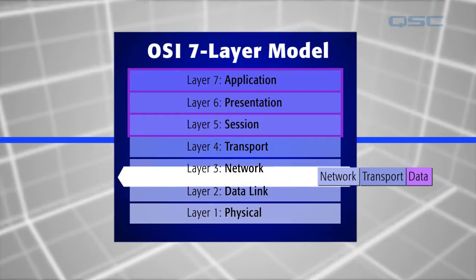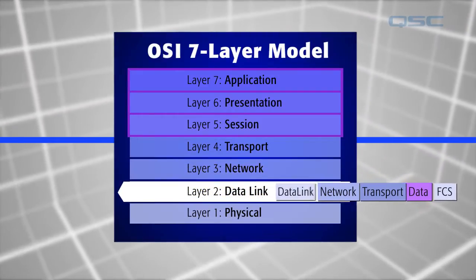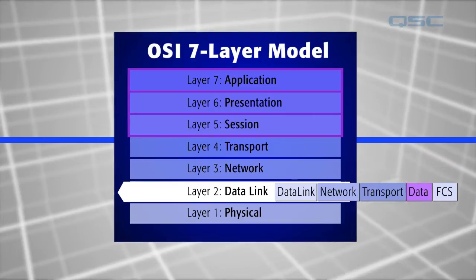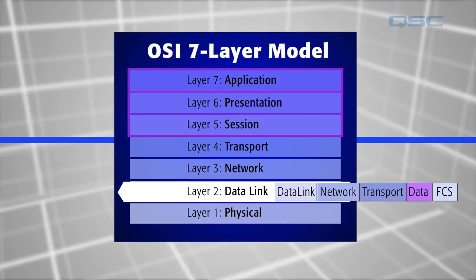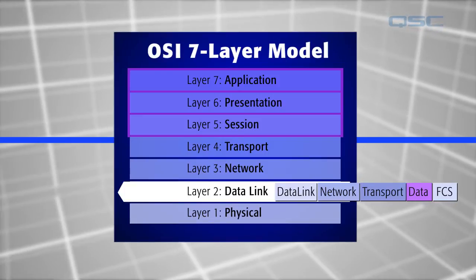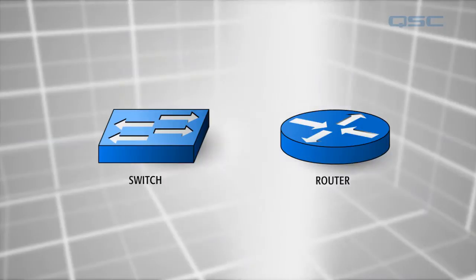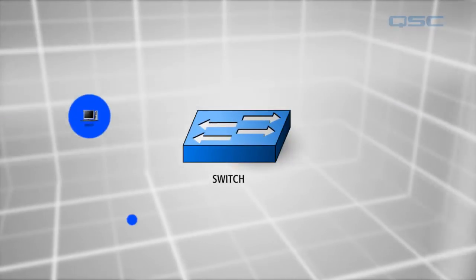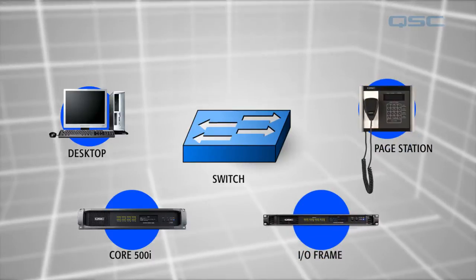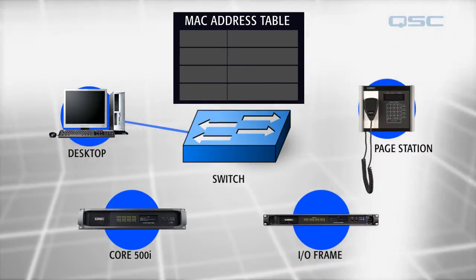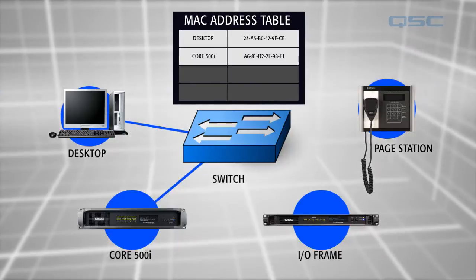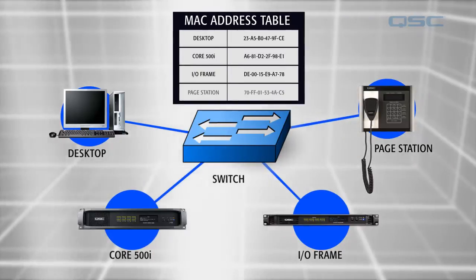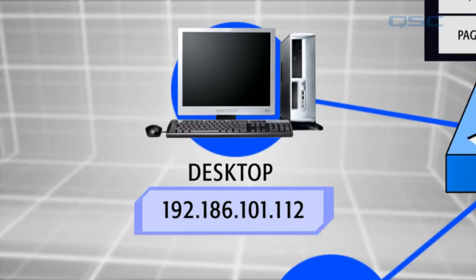Layer 2 is the data link layer, where data is assigned additional data link tags, including a checksum, which the receiving end will use to confirm the entire data segment has been received. Simple switching and bridging operate at Layer 2. What a network switch does is look at everything connected to it and create a table of that information using the MAC addresses of the devices it finds. A MAC address is a permanent and unique name for a device, like a social security number.